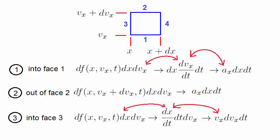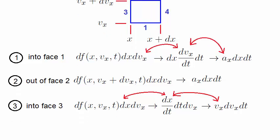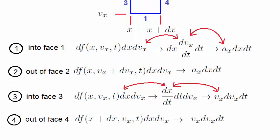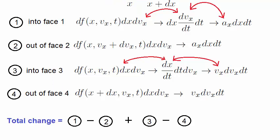Finally, we look at the number of particles coming out of face 4, and we give this the same treatment for the volume element. So the total change of particle number in the volume element is given by the difference of particles going into and out of faces 1 and 2 respectively, plus the particles going into and out of faces 3 and 4 respectively.